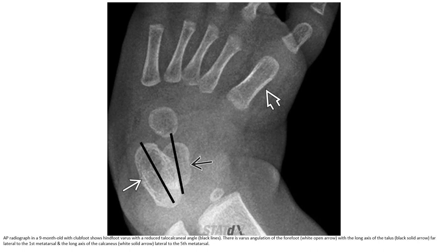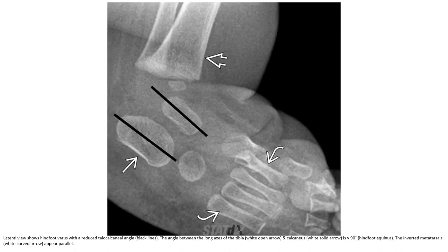An AP radiograph in a neonate with clubfoot shows hindfoot varus with reduced talocalcaneal angle. There is varus angulation of the forefoot with the long axis of the talus medial to the first metatarsal and the long axis of the calcaneus lateral to the fifth metatarsal. On lateral view, hindfoot equinus is present with the angle between the long axis of the tibia and calcaneus more than ninety degrees. The inverted metatarsals appear parallel.